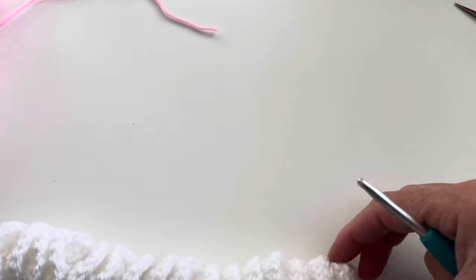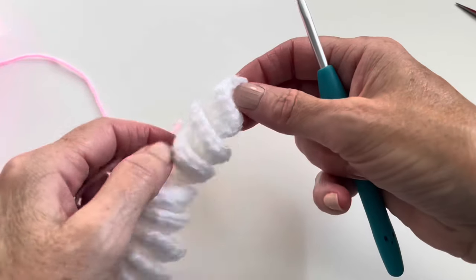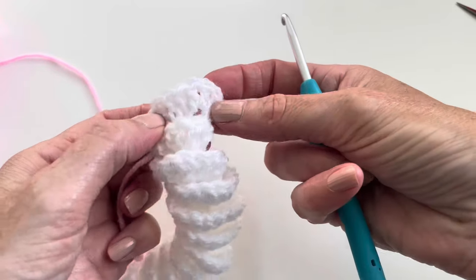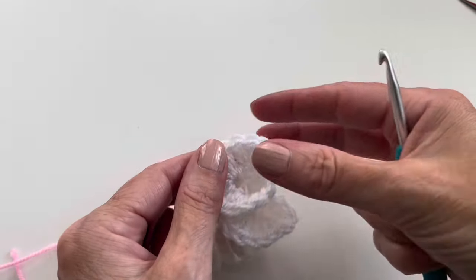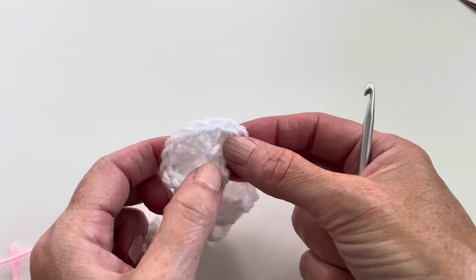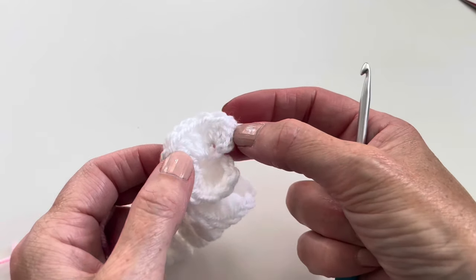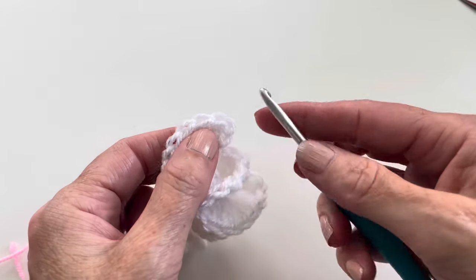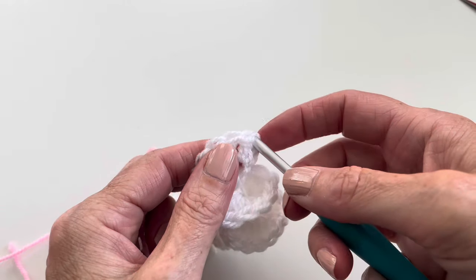And now I want to start with pink yarn, and therefore I will start in the same space in the beginning where I started with the chain 3 on this side. And I will insert in the third chain of the beginning.